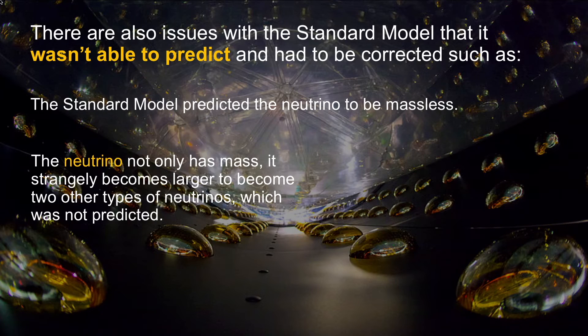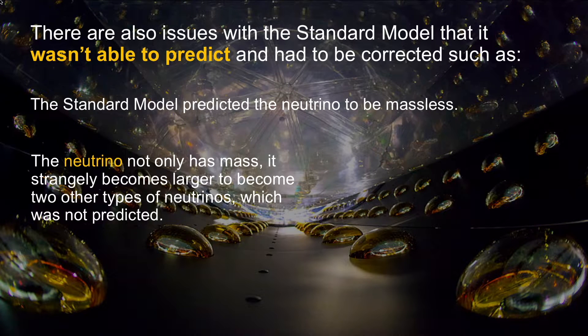Over time, as the standard model was being developed, there were also things that it was not able to predict and had to be corrected, one of which is the neutrino. The standard model originally predicted the neutrino to be massless. Not only does a neutrino have mass, but strangely it becomes larger into two other types as it travels from the sun to earth. Where does that mass come from?